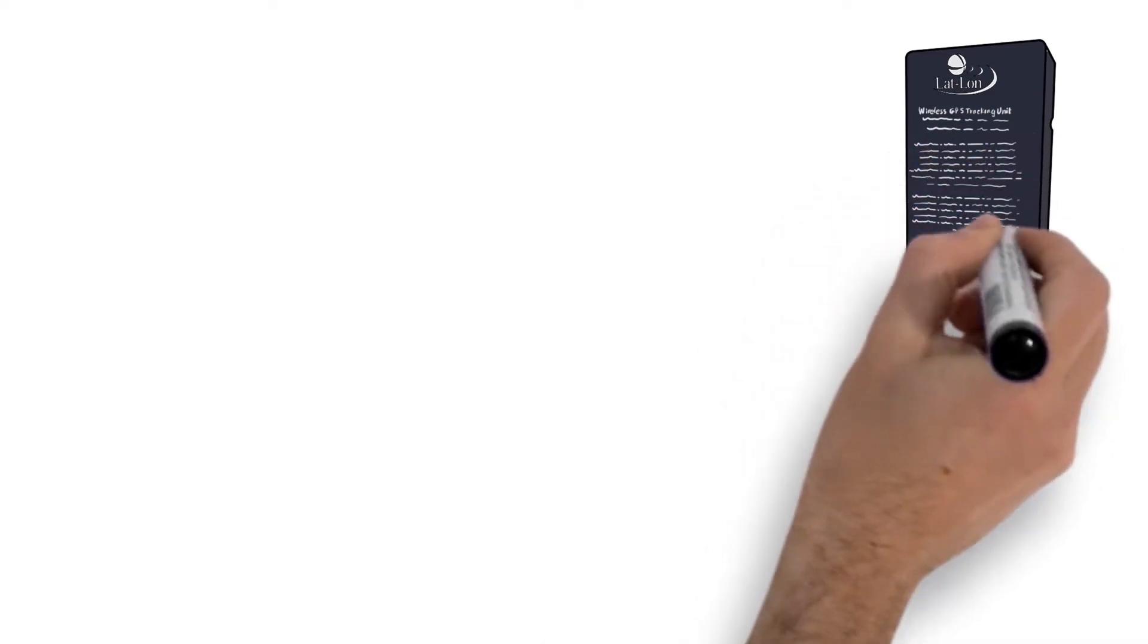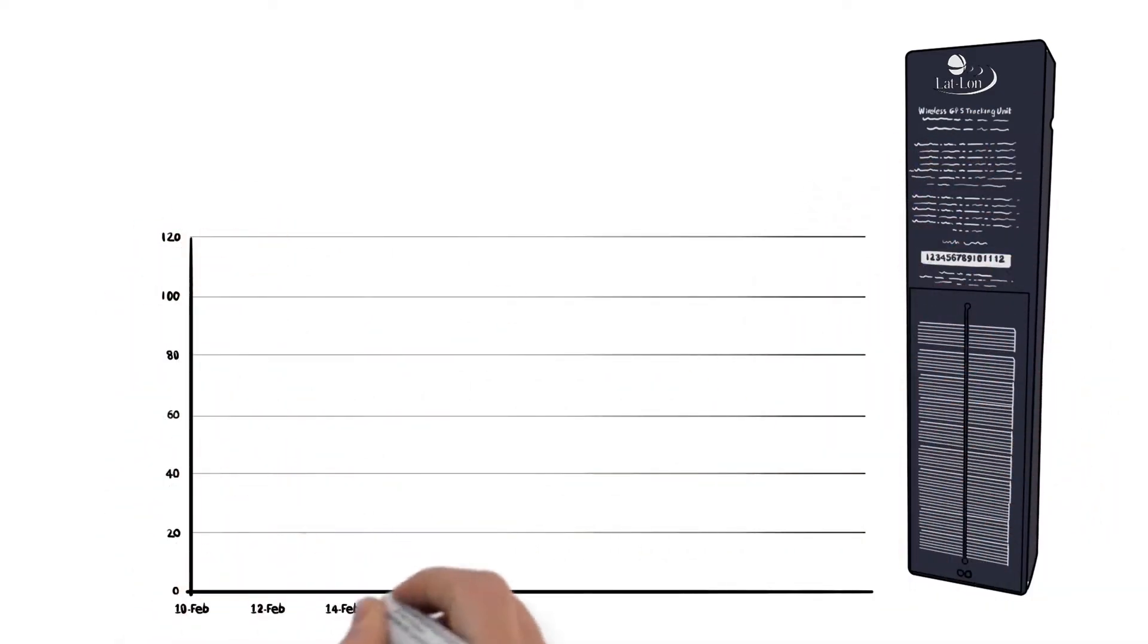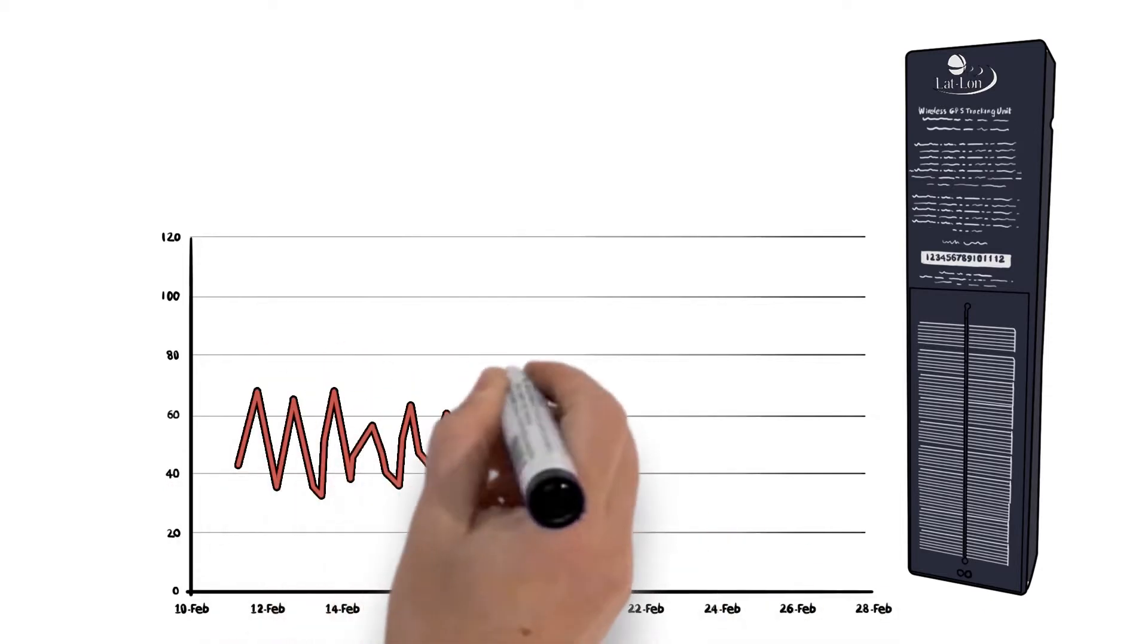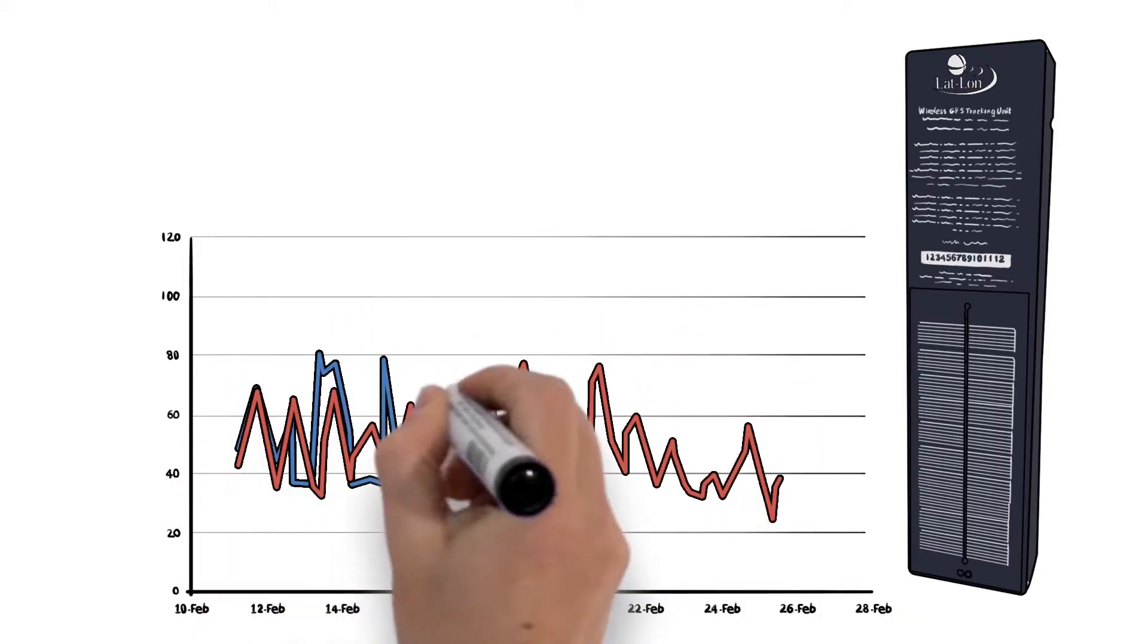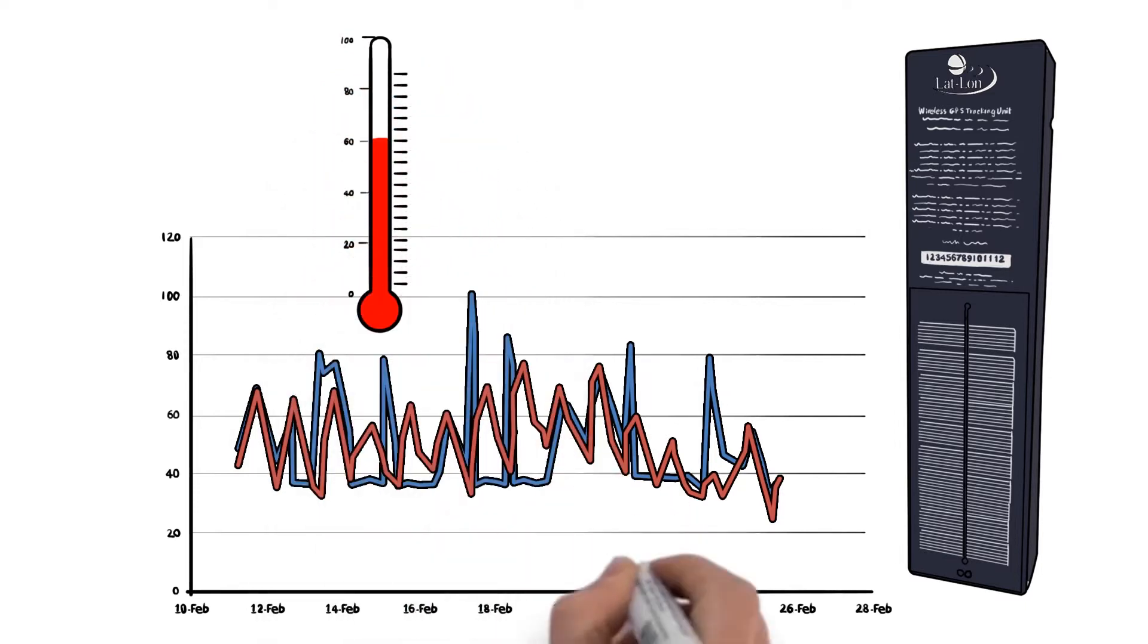Susan also uses the Compact Tracking Unit from Latlon, plus shipments that are rather sensitive and require close monitoring. Susan can use a CTU with temperature or pressure sensors, hatch security monitoring, or even add other digital analog inputs.